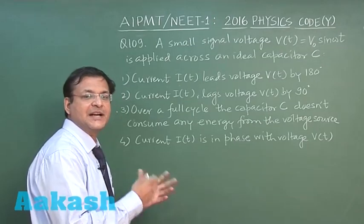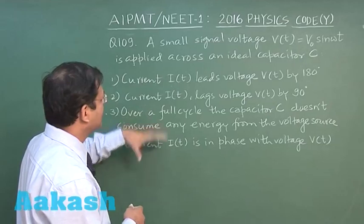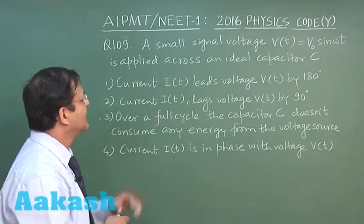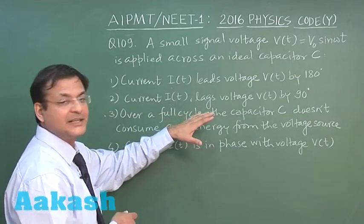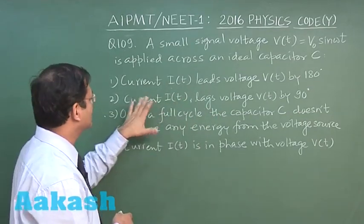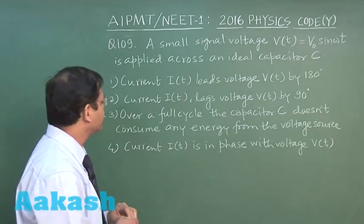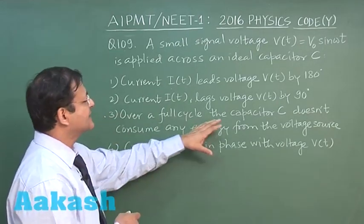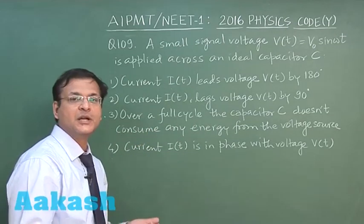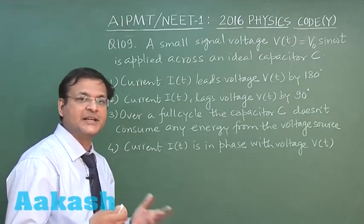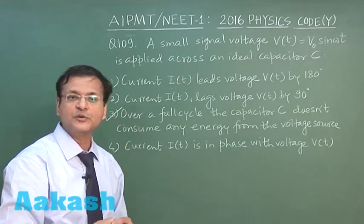In capacitor the current leads the voltage by 90 degree. In any of the option this has not been given. It is saying it is leading by 180 degree. It is saying that it is lagging by 90 degree, no it is leading by 90 degree. Fourth option says that it is in phase, wrong option. Third option says that over a full cycle the capacitor C does not consume any energy from the voltage source. This is true for ideal capacitor as well as ideal inductor. This is the answer 3, correct answer for question 109.